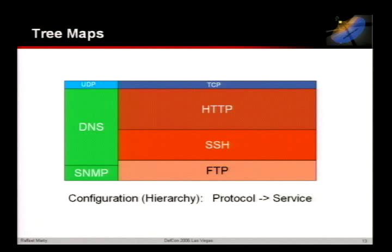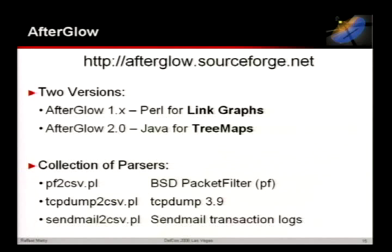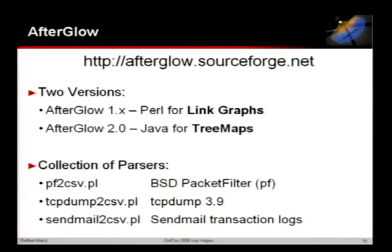Now let's switch over to Afterglow, which you'll find on the CD or on SourceForge. There are two versions right now — a version 1.x, currently 1.5.6, which is basically a Perl script that generates link graphs. In version 2.0 I started coding in Java, but the library I'm using is a little buggy and the author wasn't very responsive, so for now there are two versions. Hopefully at some point there's a 3.0 which combines everything.